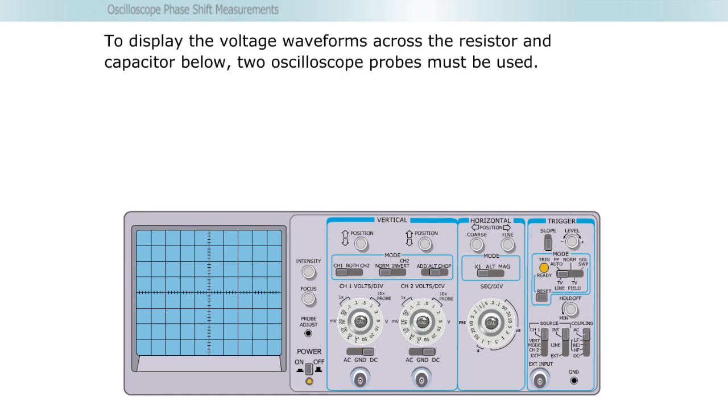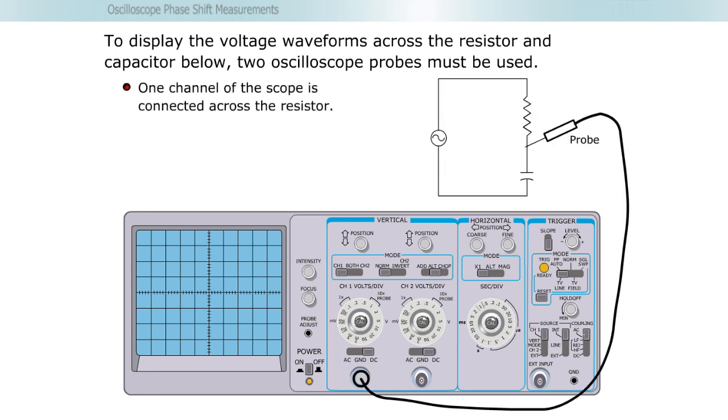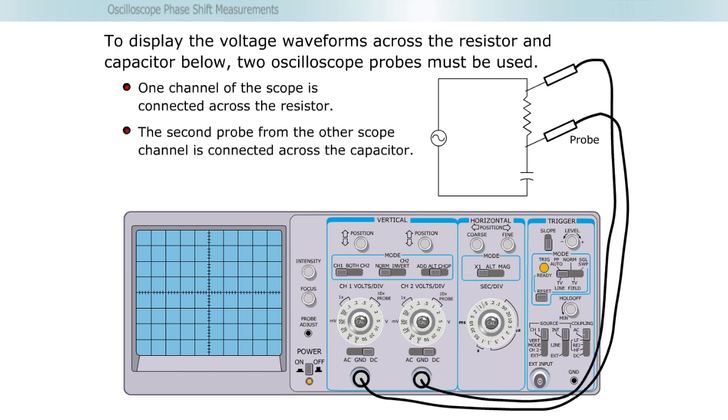To display the voltage waveforms across the resistor and capacitor below, two oscilloscope probes must be used. One channel of the scope is connected across the resistor. The second probe from the other scope channel is connected across the capacitor.